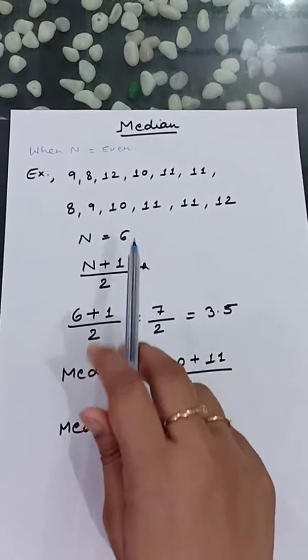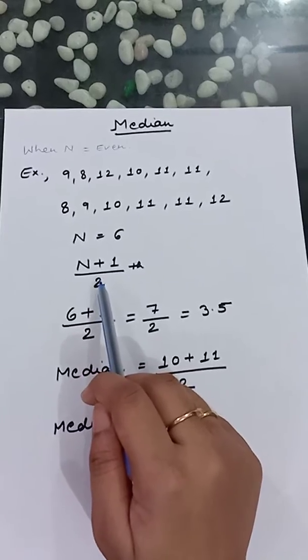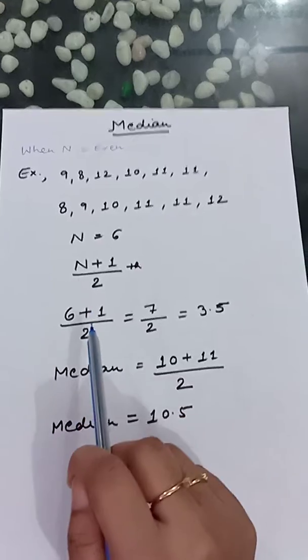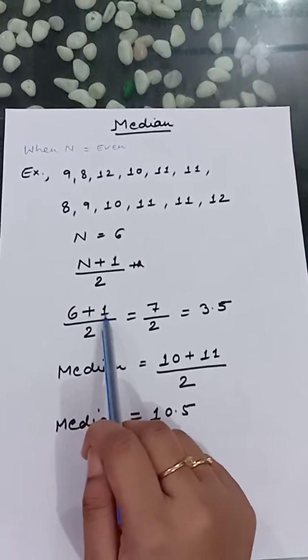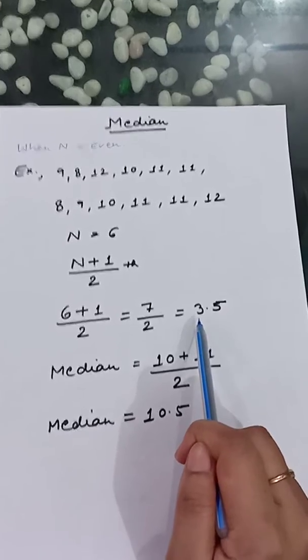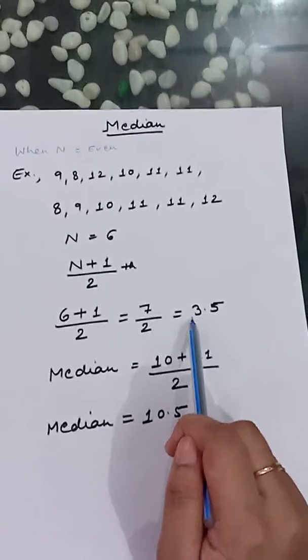So for calculating median, the formula is n plus 1 upon 2. So we just put the value: 6 plus 1 upon 2, so the answer will be 3.5. For computing median, we just need to take the third value and the fourth value. We just add them: 10 plus 11.